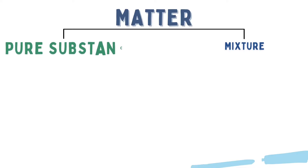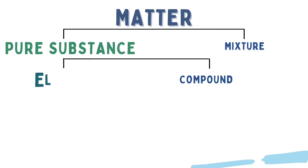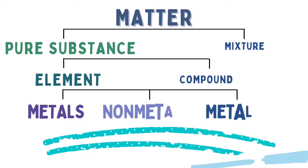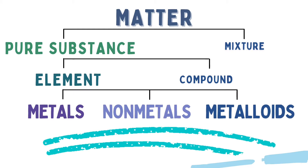Matter is classified into pure substance and mixture. Last time, we discussed that pure substances are categorized into elements and compounds. In this video, we are going to discuss elements, which are further classified into three: metals, non-metals, and metalloids.